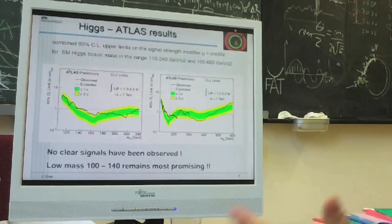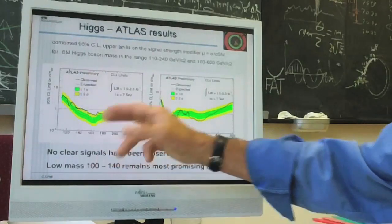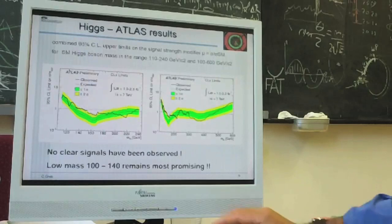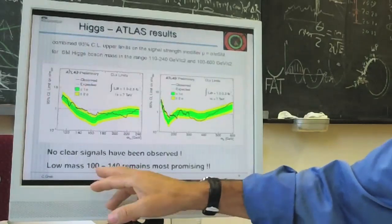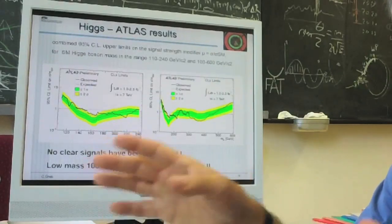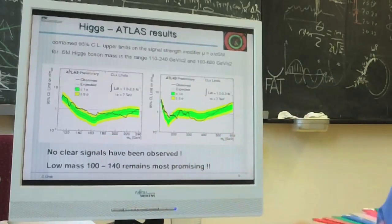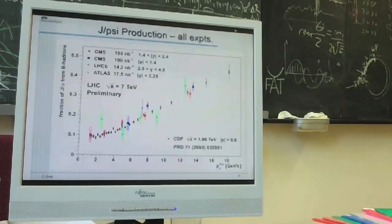So this is a measurement by CMS. And of course, ATLAS has done similar measurements, excluded similar regions. So all over at the end, just the range between 100 and about 140 GeV is really the most promising one that remains. So we will continue, of course, looking for that.